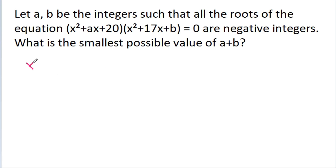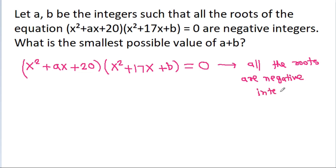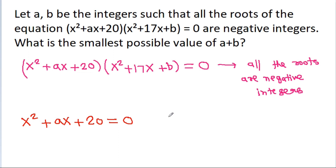The given equation is x squared plus ax plus 20 times x squared plus 17x plus b is equal to 0, and all the roots of this equation are negative integers. We can make two equations: x squared plus ax plus 20 equals 0, and x squared plus 17x plus b equals 0.